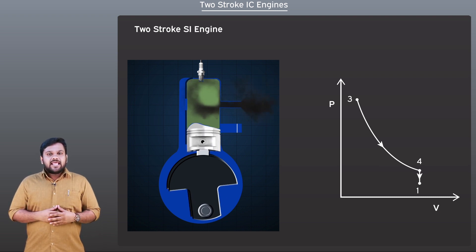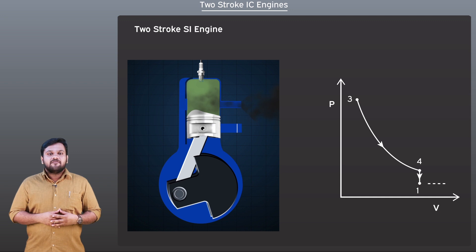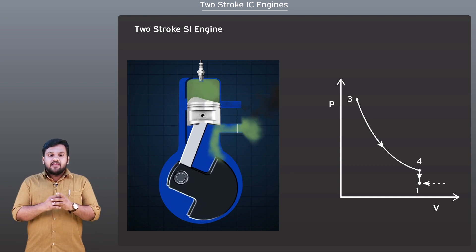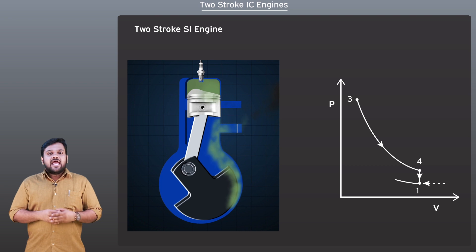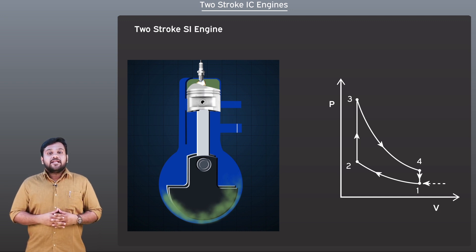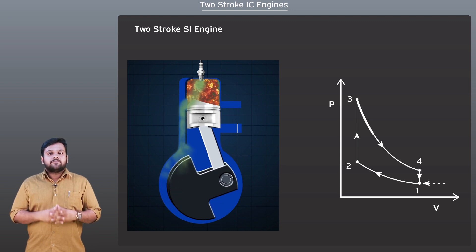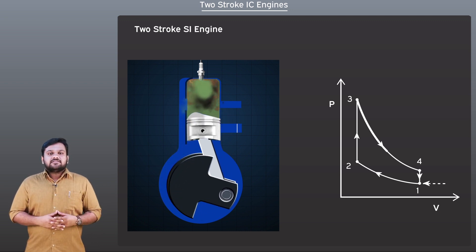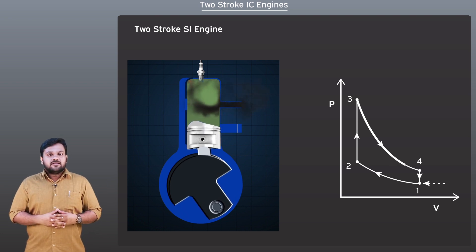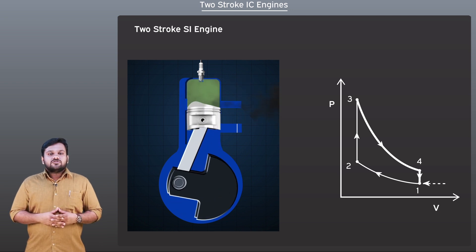Now when the piston again moves upwards during what is known as the compression stroke, the inlet port is covered, and during the same time the fresh air-fuel mixture is compressed and exhaust gases are removed. At the end of the compression, a spark plug residing at the top of the cylinder introduces a spark which ignites the air-fuel mixture, thus creating a high pressure that causes the piston to expand. The removal of the exhaust gases with the help of the fresh air-fuel mixture is known as scavenging. This is the working principle of the two-stroke SI engine.